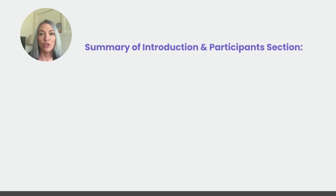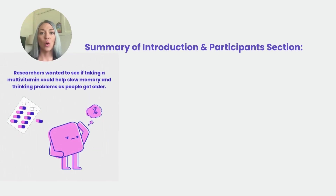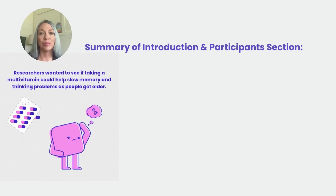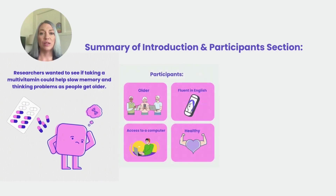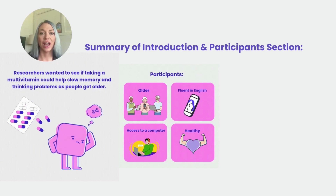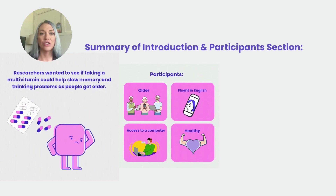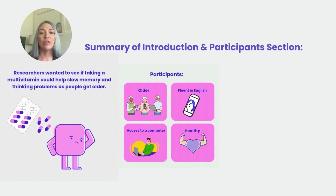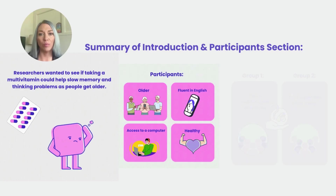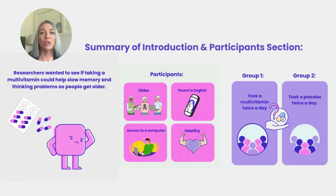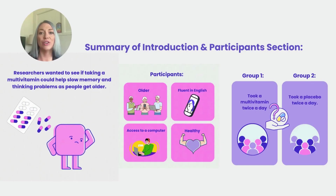Let's quickly summarize what we just read. Researchers wanted to see if taking a multivitamin could help slow memory and thinking problems as people get older. Female participants had to be over 65 years old and men had to be over 60 years old. They had to be healthy with no history of stroke, cancer, or other major illnesses in the last two years. They also had to be able to speak English fluently and use a computer. Participants were randomly split into two groups: Group 1 took a multivitamin twice a day, and Group 2 took a placebo — a pill with no active ingredients — twice a day.